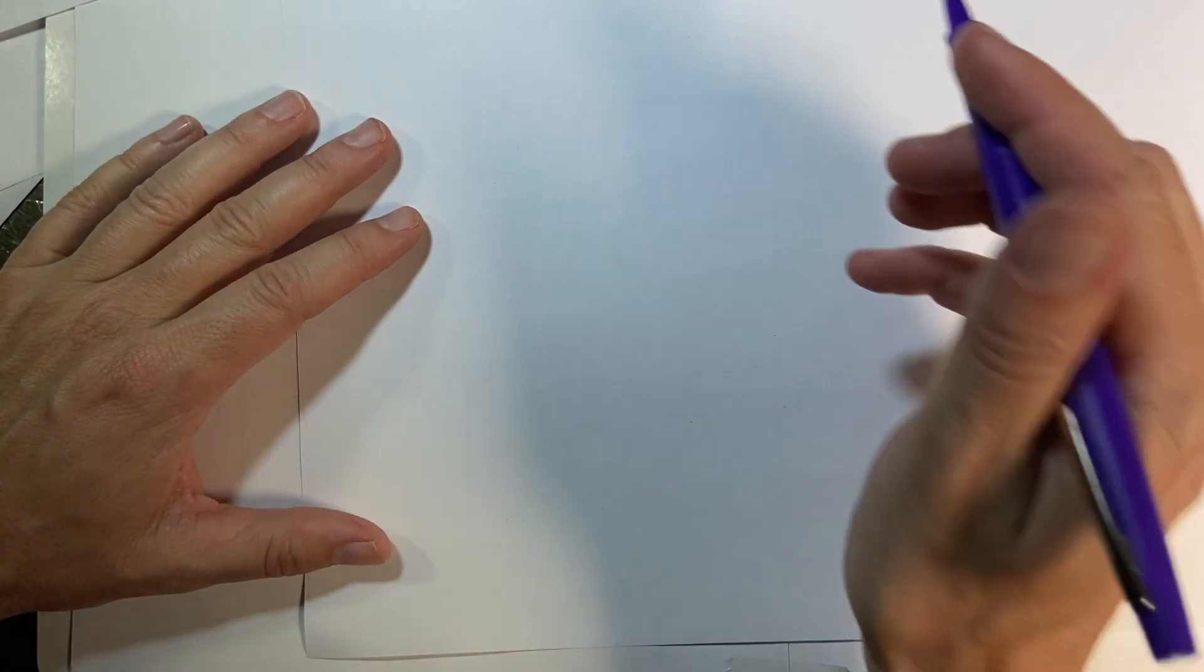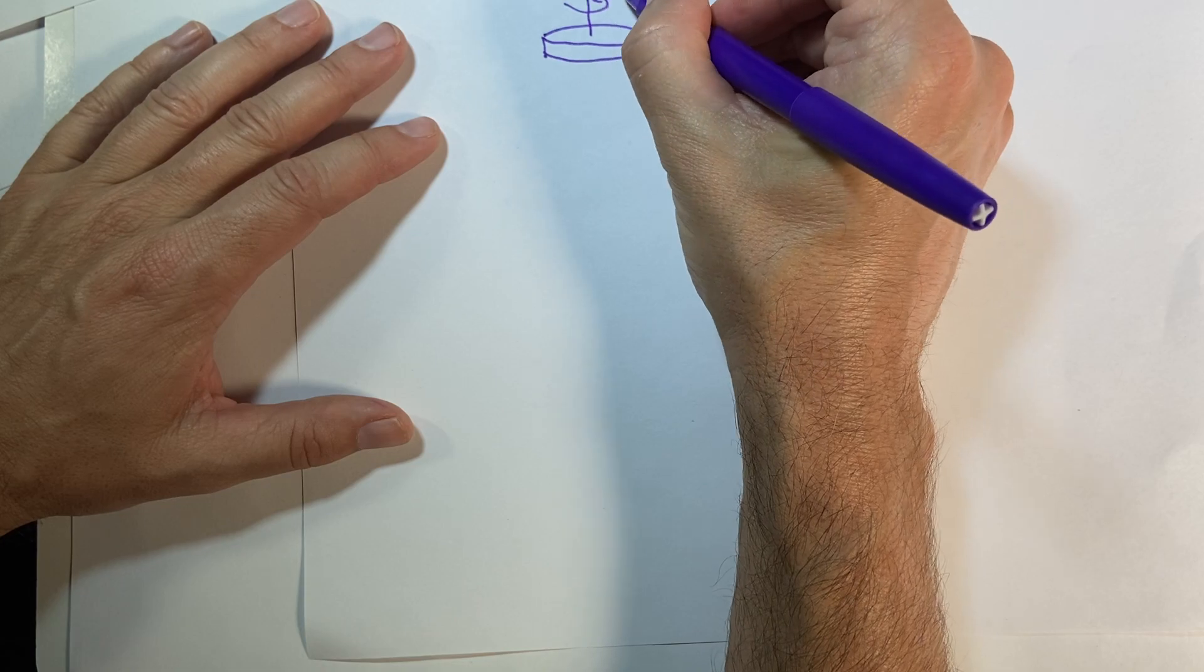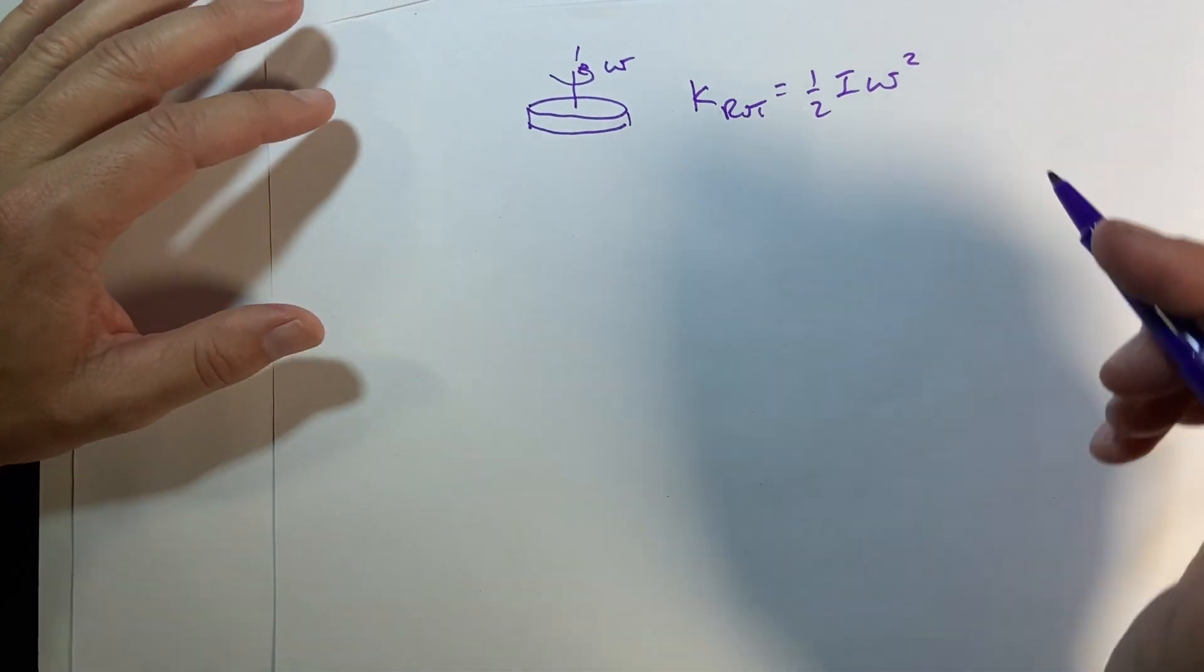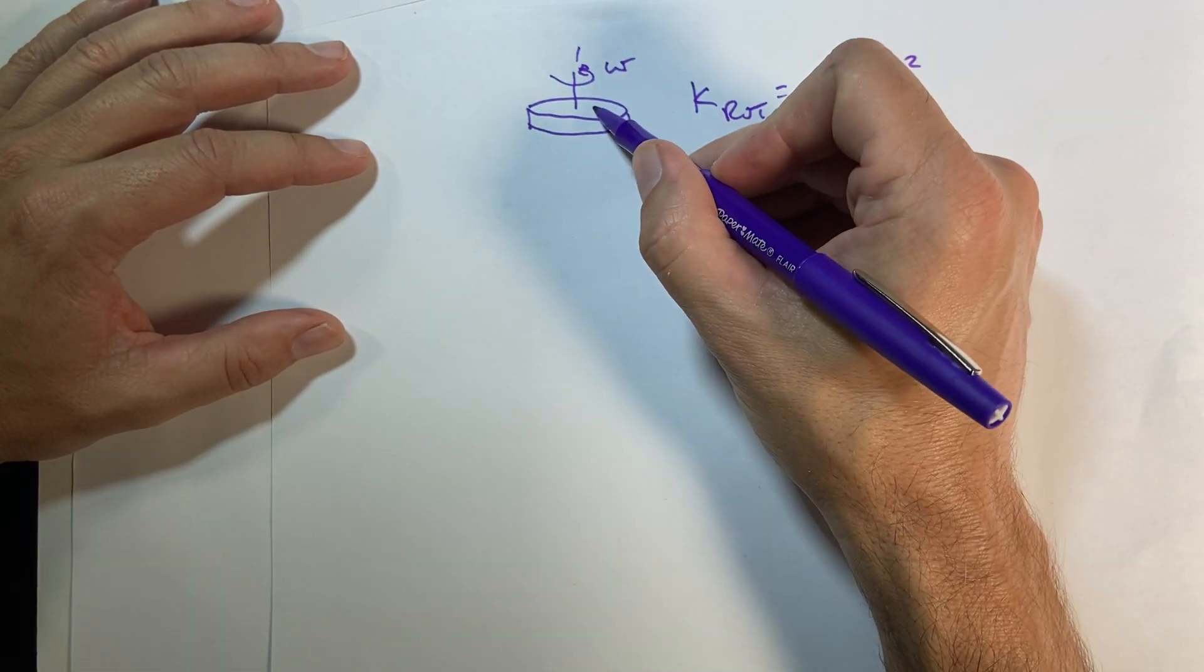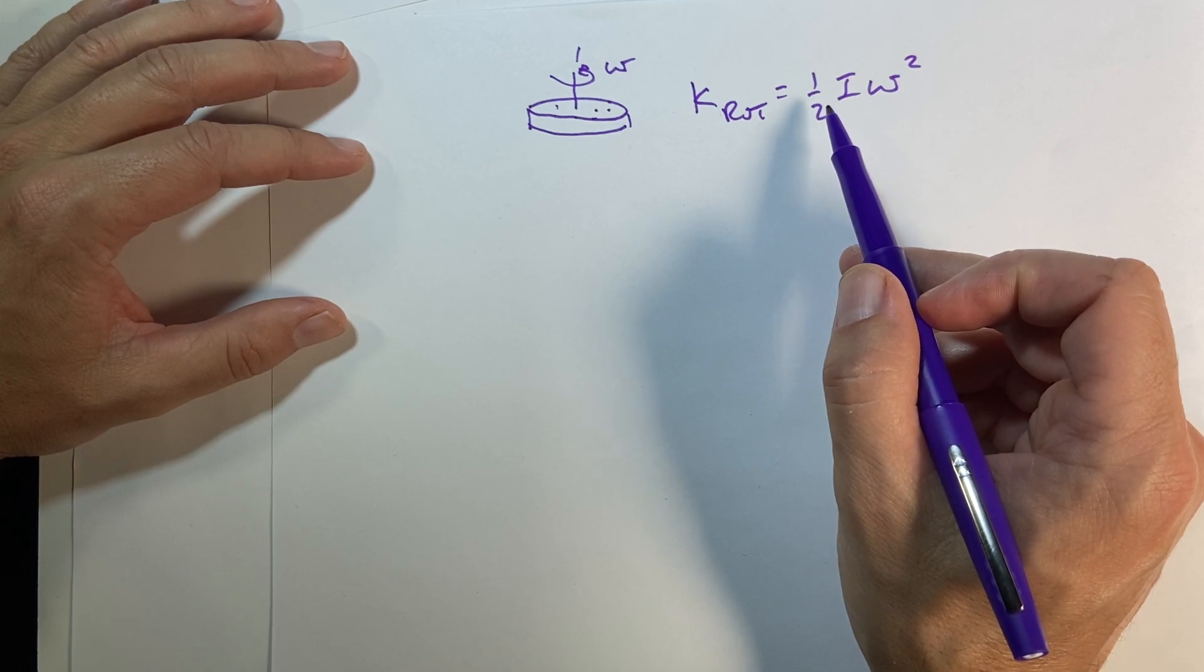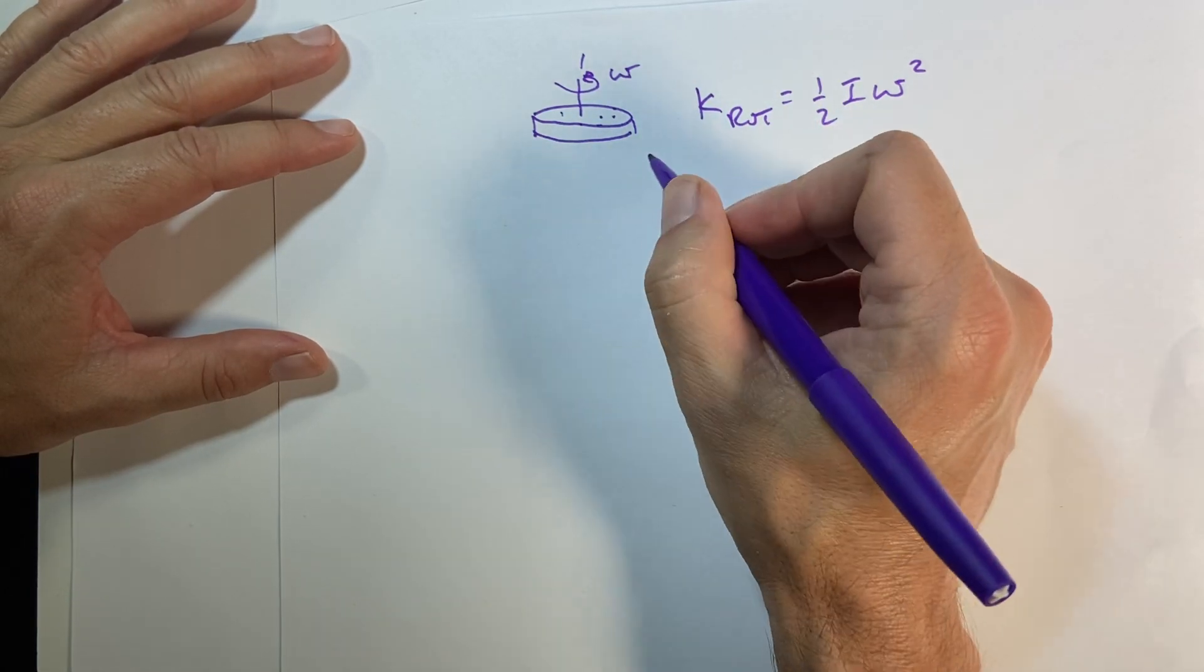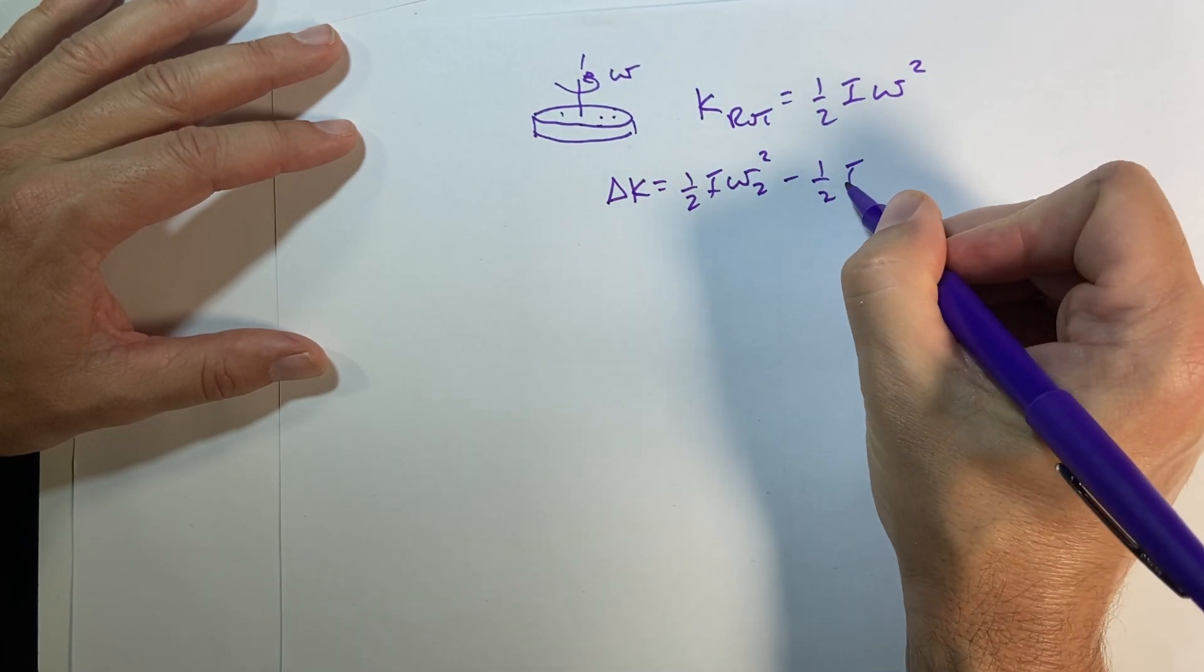So if I have a rotating object, in this case it's a disc, then the rotational kinetic energy is one-half I omega-squared. So you can think of this as a whole bunch of masses in here, and they all have just normal translational kinetic energy, and you can get this equation out of it. I'll have to maybe do that derivation sometime, or at least show you with a few masses to show you they get the same thing. But for now, we'll just say that's true. So the change in rotational kinetic energy is going to be one-half I omega-2-squared, minus one-half I omega-1-squared.